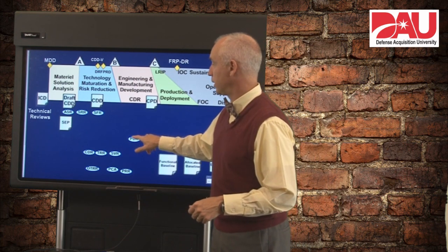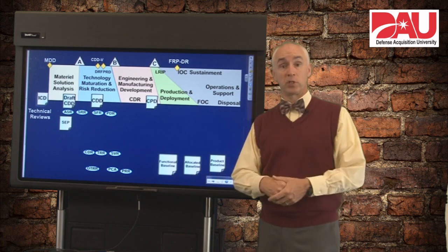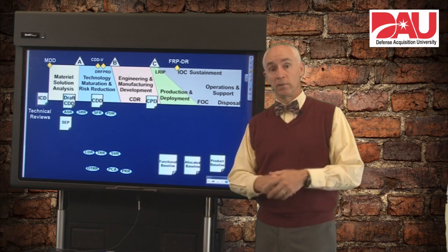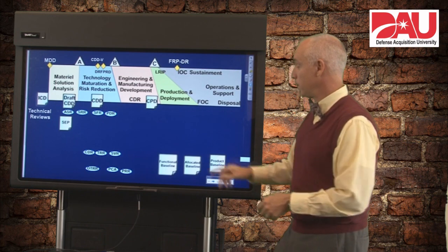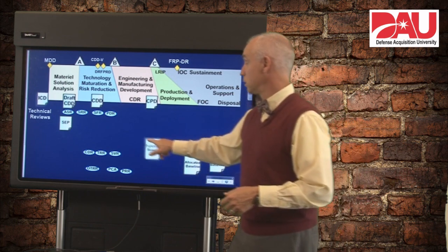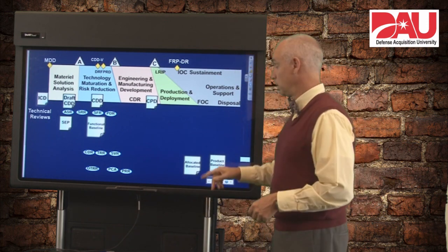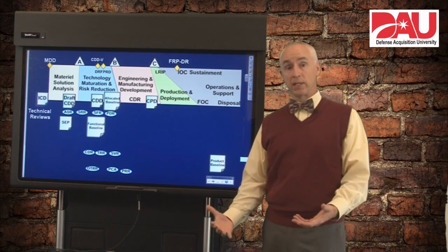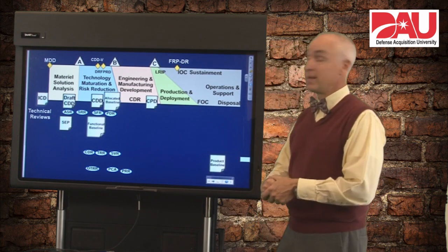Shortly after that, we should be having a Preliminary Design Review, which takes a look at the design based on those functions we've defined for the system. We're going to look at whether we've allocated those functions across all of the system design piece parts in our preliminary system design. There are two baselines established at these two reviews: a functional baseline is established at the SFR, and we should have an allocated baseline established by the time we're done with our Preliminary Design Review.